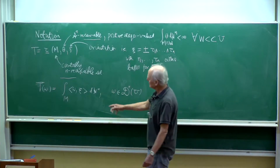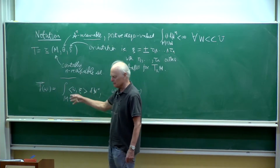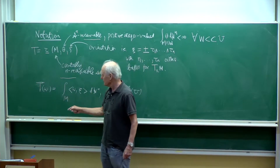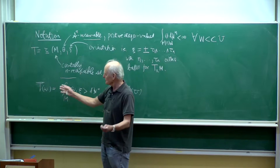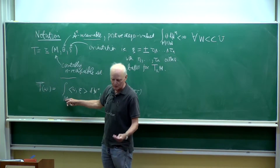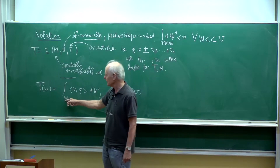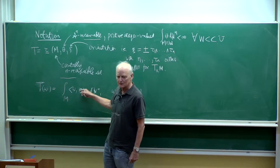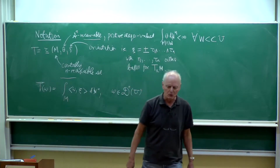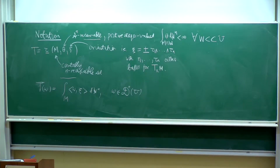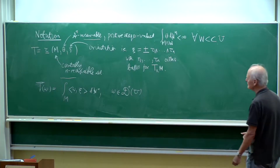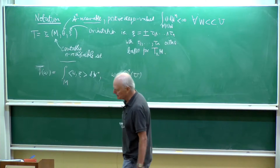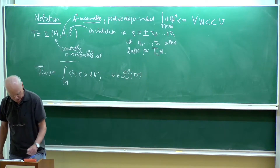It's exactly like integrating over a smooth manifold — exactly like it. The only difference is that when M is a smooth manifold, this would be a smooth manifold instead of just a rectifiable set, and xi would be a continuous orientation. That would be the normal meaning of integrating a form. So indeed, this is a generalization of the notion of integrating forms over a smooth manifold in the natural sense.